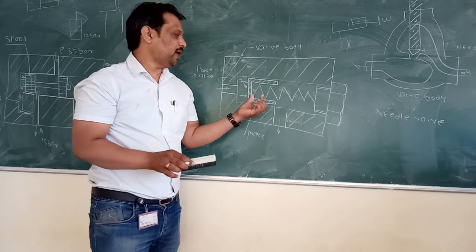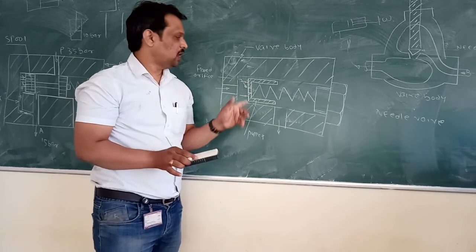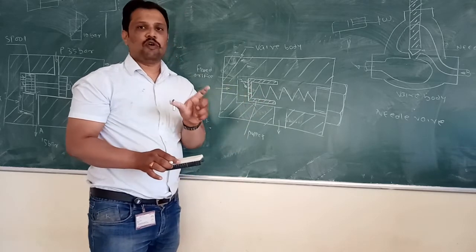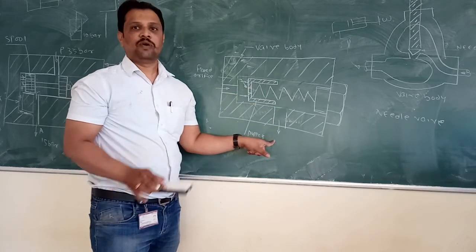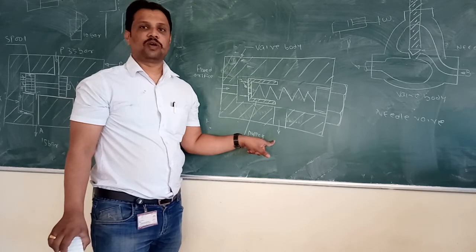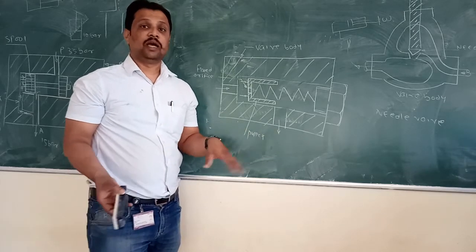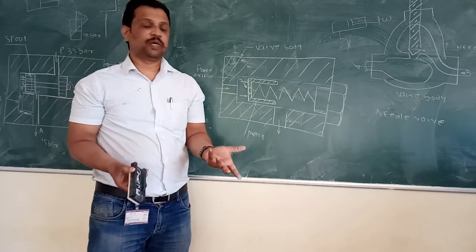Left side and right side. Oil will balance this poppet at some equilibrium position. Now, continuous flow of oil will go from this position to this side of the valve. This is called flow control valve. Pressure compensated.